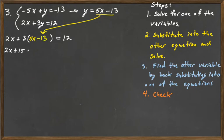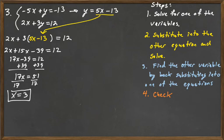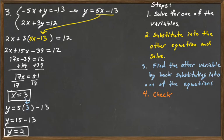So you have 2x plus 15x minus 39 is equal to 12. Combine like terms: 17x minus 39 is equal to 12. Add 39 to both sides: 17x is equal to 51. Divide both sides by 17, and x equals 3. Now we do step 3 — find the other variable by back substituting. Using y equals 5x minus 13, plug in x equals 3: y equals 15 minus 13, so y is equal to 2.